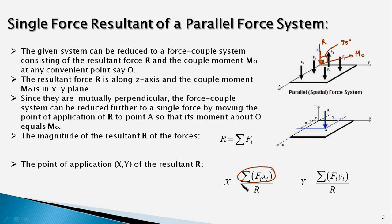X would be sigma FI XI upon R and this numerator here is the sum of moments of all the forces about the X axis. And R times Y also is the moment of the resultant R about the X axis. Equating the two expressions, we get Y equals FI YI upon R.